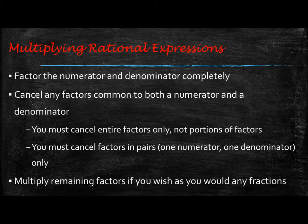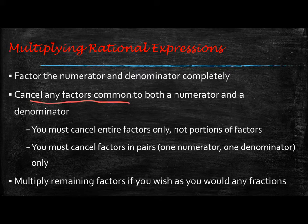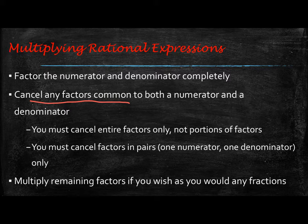So how is this going to work for multiplying rational expressions? You will still factor the numerator and the denominator completely. When we're multiplying, we multiply straight across — numerator times numerator and denominator times denominator. That means you can cancel any factors that are common to both a numerator and a denominator. It doesn't matter if it's in the right fraction or the left fraction, because when you multiply straight across those numerators will multiply together and the denominators will multiply together. You must cancel entire factors only, just like in simplifying, and you must cancel factors in pairs — one numerator and one denominator only. Then you can multiply remaining factors if you wish, but you do not have to.